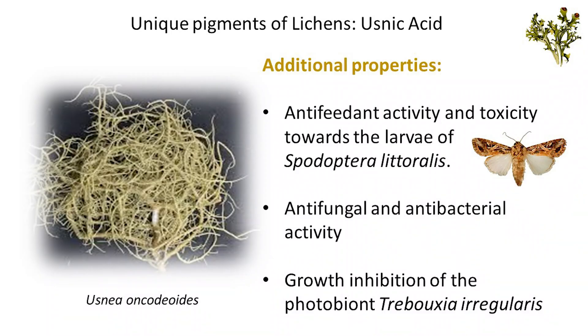Vulpinic acid and usnic acid inhibit the growth of the photobiont Trebouxia irregularis within some lichens, suggesting a regulatory mechanism intrinsic to the lichen.